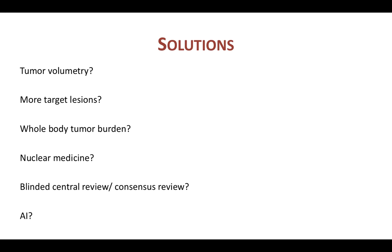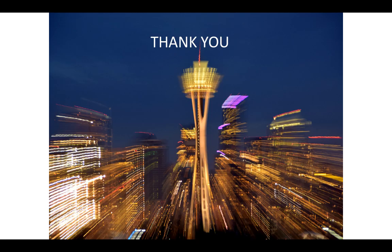What are the solutions? There are many possibilities: volumetric assessment, selecting more target lesions or the entire whole body tumor burden, nuclear medicine, blinded central review, and AI will surely have a role in the future. What is clear is that RECIST 1.1 guidelines are pretty limited and may not reflect overall response — and this is important because all our recent new drugs that have been approved are approved based on trials using RECIST 1.1 guidelines. I'm pretty sure that in the coming months or a year we might have RECIST 1.2 guidelines that will address these shortcomings and ways to overcome them. I end with this photo of Seattle where I spent two years doing my fellowships. Thank you so much.